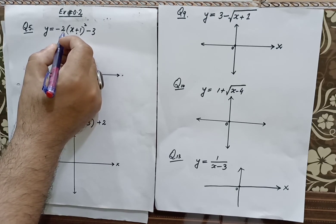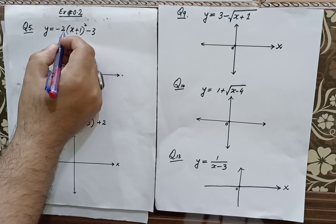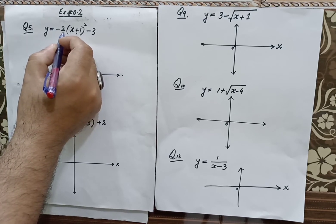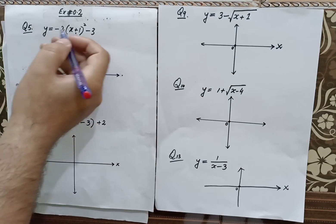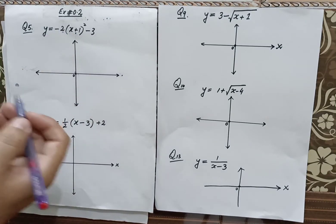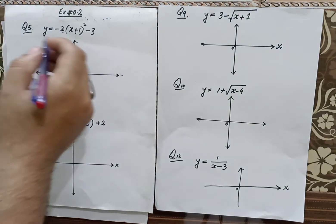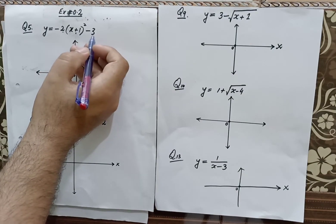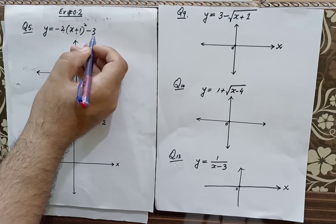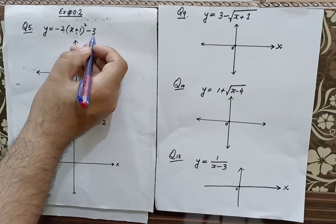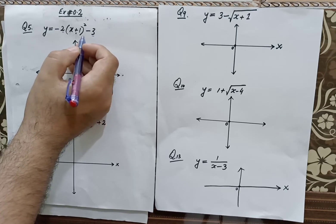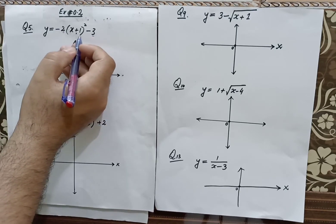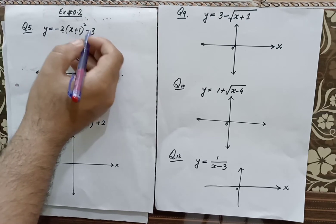The coefficient of the quadratic term will allow you to stretch or compress the x-axis. Here you can see that there is a supplemental or additional constant. So dear students, when we have a parabolic or algebraic function, the additional constant will always translate along the y-axis.